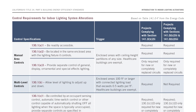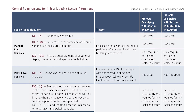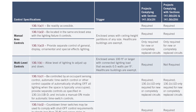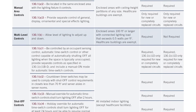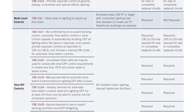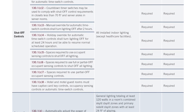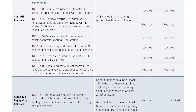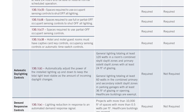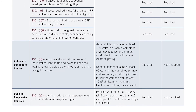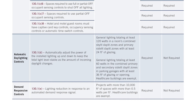Table 141.0-F in the Energy Code outlines control requirements for indoor lighting system alterations. Before we wrap things up, how about a quick review?